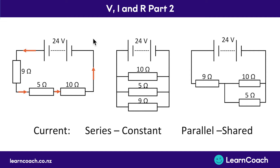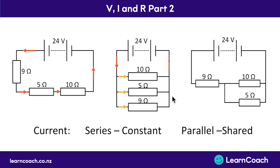Whereas in a parallel circuit, the current is shared between all of the different branches. The current comes down and has three different options of where to go. We'll use formulas to work out how much goes through each branch. Once the current has passed through each of these different resistors, it adds back together again when it comes back around to the battery.